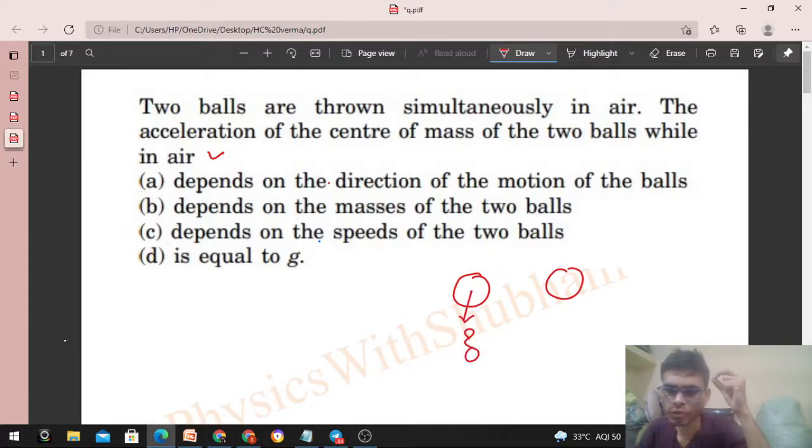Each one will have an acceleration of g downward. Why? Because whenever any object is in the air, that is the case of free fall or free fall, acceleration g downward.